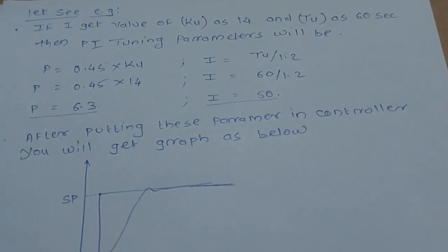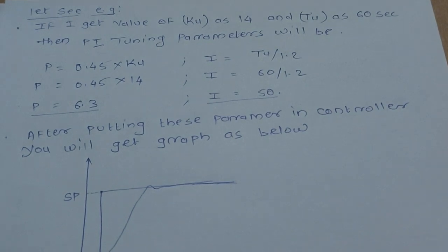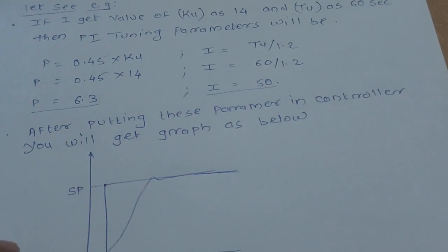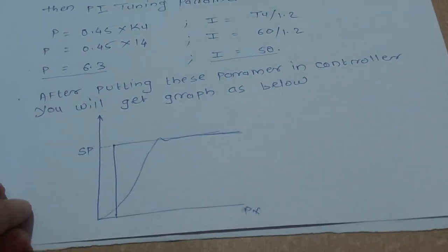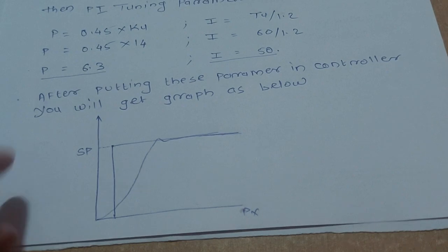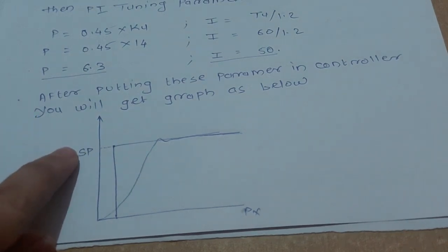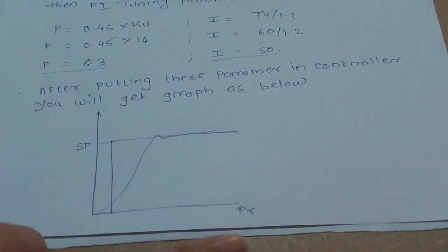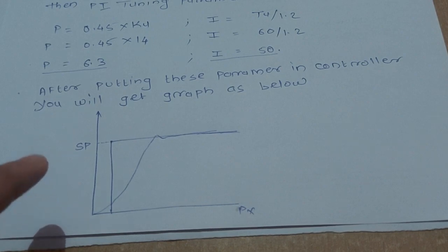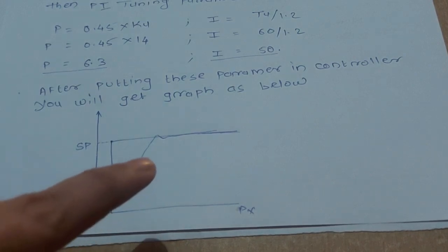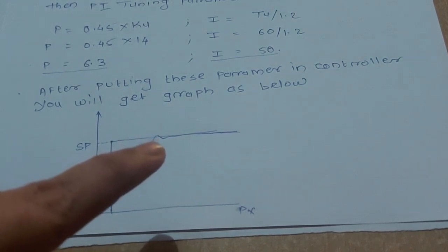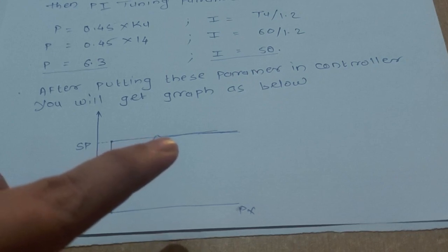If I put these two parameters in the PID controller of any PLC or DCS automation system, we'll get the graph as follows. See, here this is the set point and this is the process value. If I put those values of P and I, this graph will reach the set point and it will not oscillate.